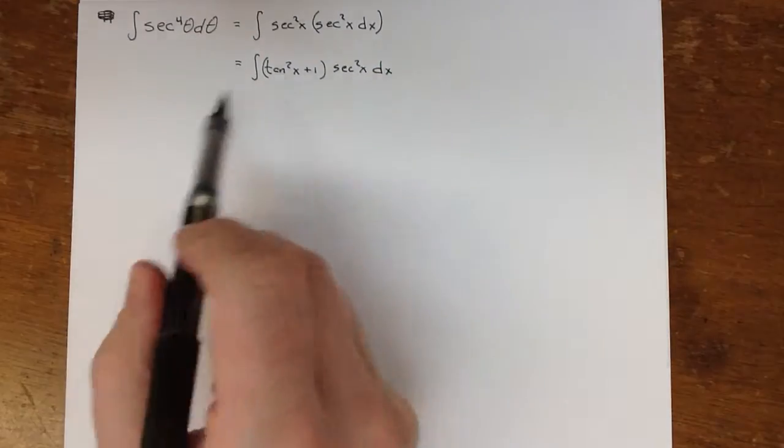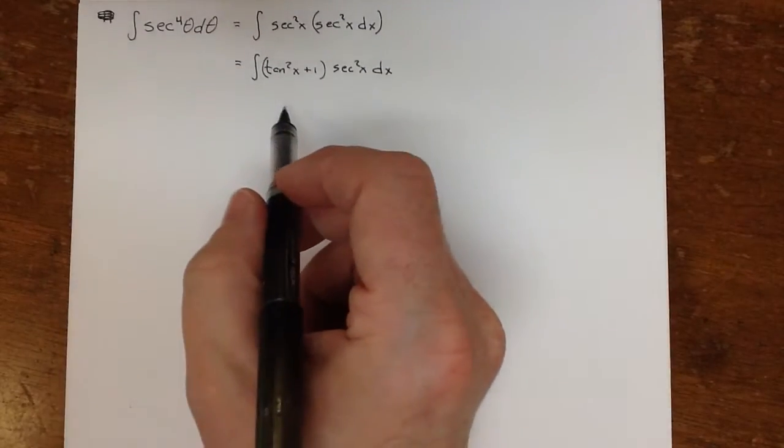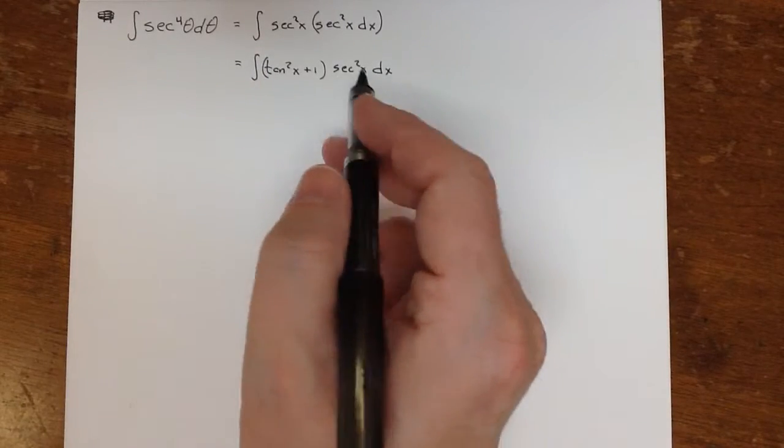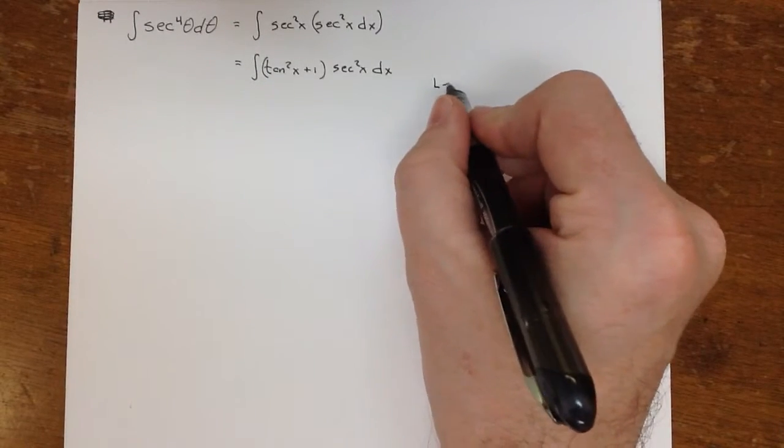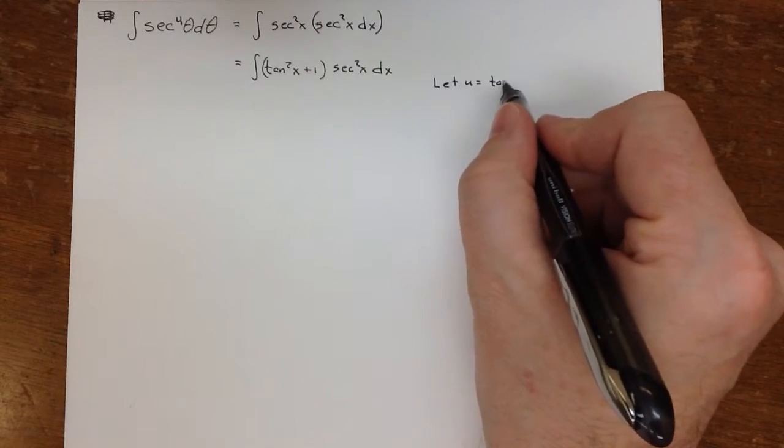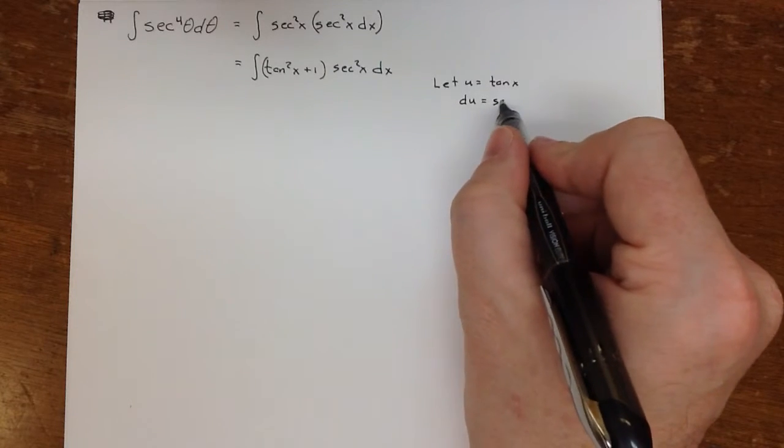And I changed my variable from theta to x just out of habit. Don't worry about that. We'll just do it with x. So I've got this. Now I want to let u equal, this is just a u substitution, let u equal tan x. So du is going to be secant squared x dx.